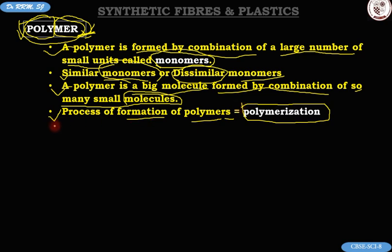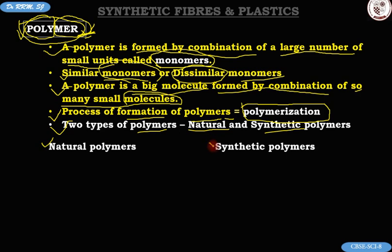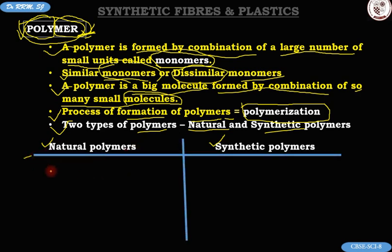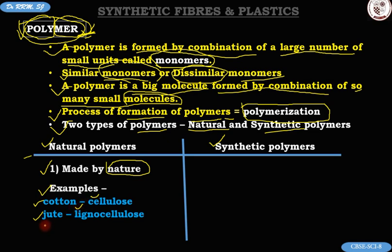Let's apply our basic concept again. We have two types of polymers — natural and synthetic. Let me draw a small table. Natural polymers are made by nature and exist in nature. Examples: cotton, which is a polymer of cellulose; jute, which is a polymer of lignocellulose; and cellulose itself is a polymer of the glucose monomer.